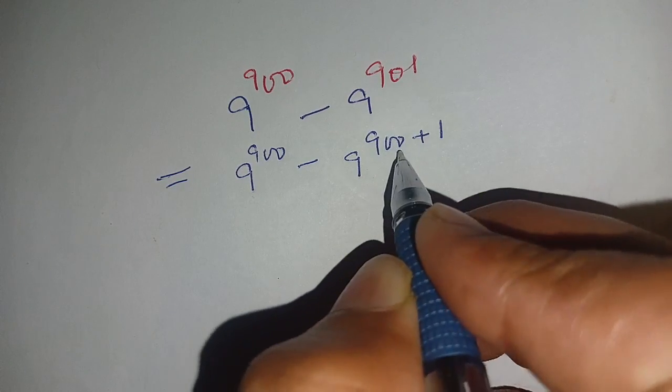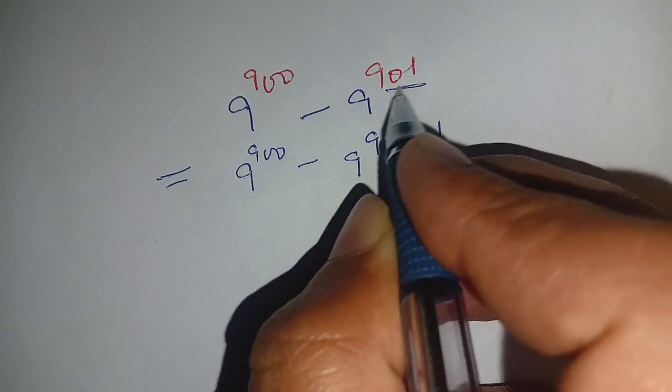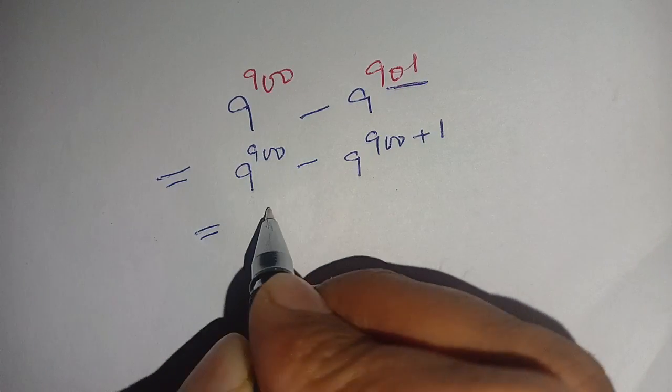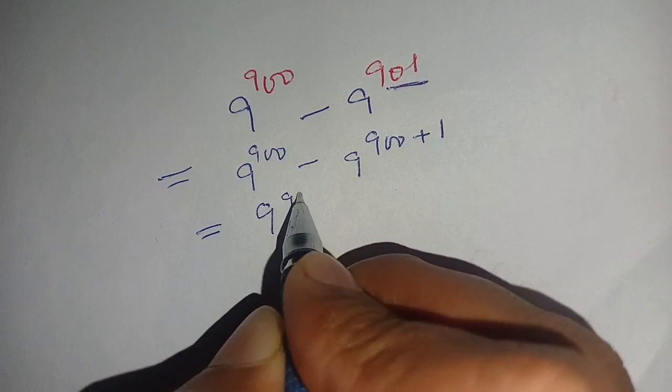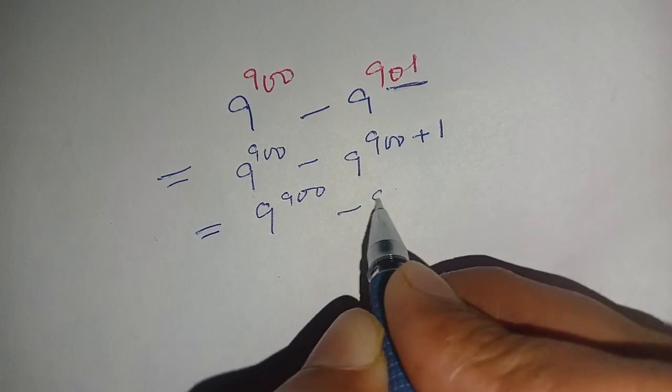Because 900 plus 1 becomes 901. Now we can write this as 9^900 minus 9^900 times 9^1.